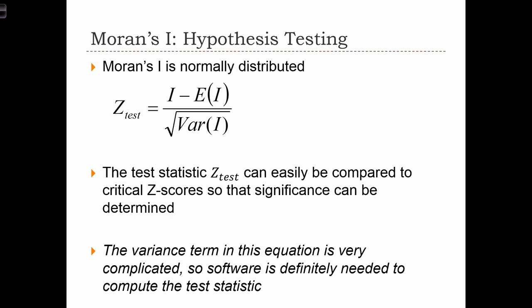We can also use Moran's I in a hypothesis test. The way we do this is by assuming that Moran's I, the statistic that we compute, is normally distributed. And we can standardize a Moran's I into a z-score.